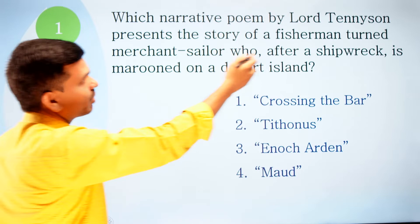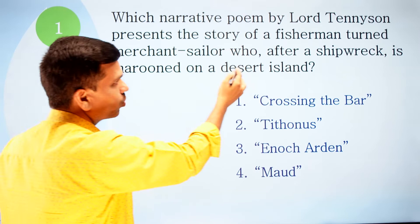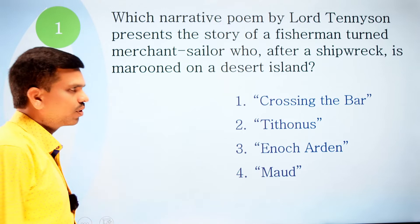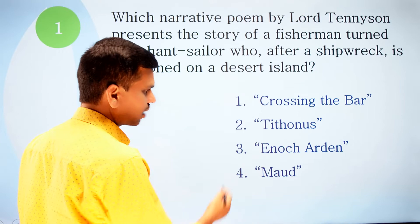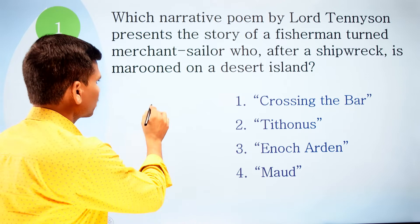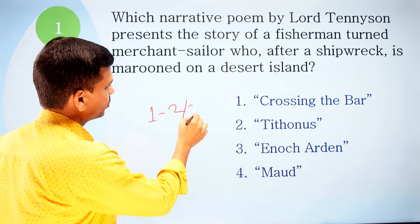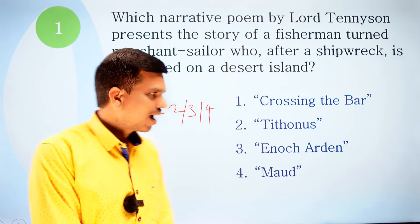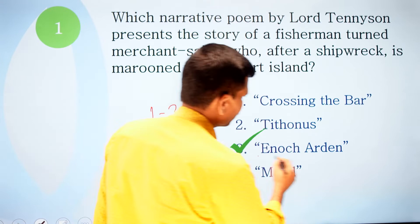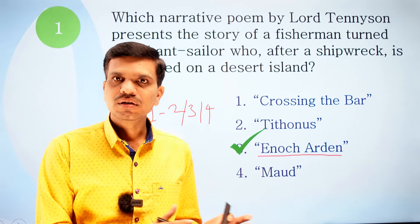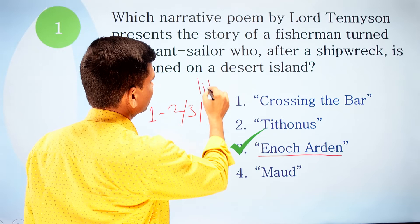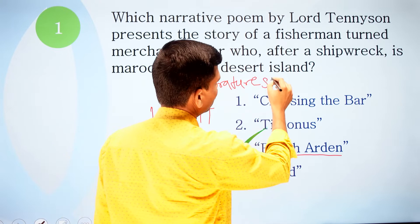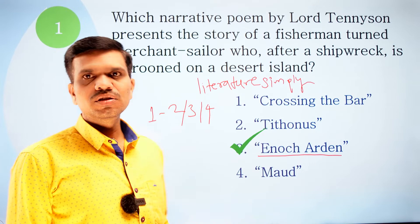Question one: Which narrative poem by Lord Tennyson presents the story of a fisherman turned merchant sailor who, after a shipwreck, is marooned on a desert island? The four options are: one, Crossing the Bar; two, Tithonus; three, Enoch Arden; and four, Maud. The correct answer is number three, Enoch Arden. I will provide this PowerPoint as a PDF on our Telegram channel, 'Literature Simply.'